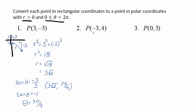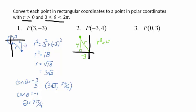Let's look at the second one now. The point negative 3, 4. Let's first draw where that would live in the coordinate system. Negative 3, 4 would live in the second quadrant. It would be 3 units to the left and 4 units up, and our radius would be here. By the Pythagorean theorem, we know that r squared is 4 squared plus negative 3 squared, so that r squared is 16 plus 9 is 25, and so r has to be 5.